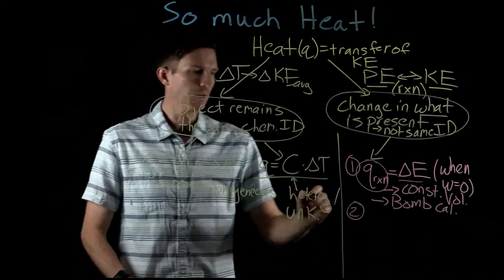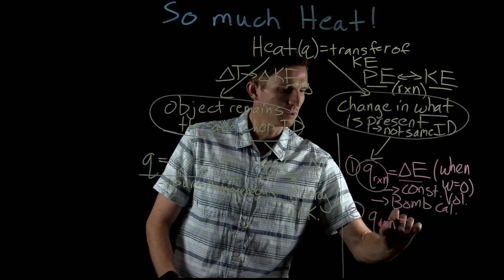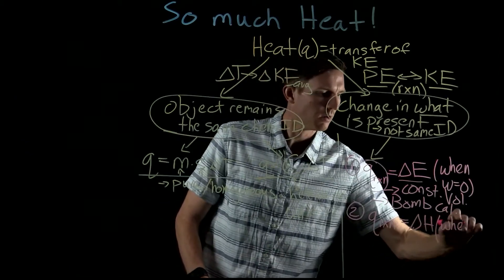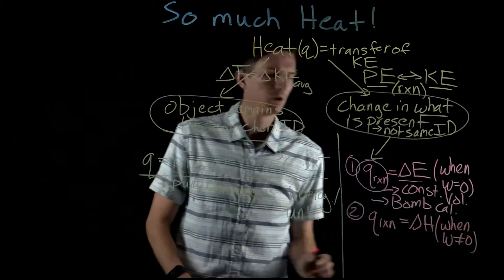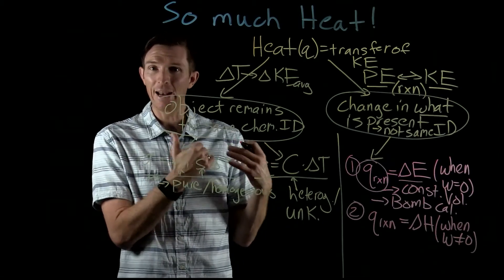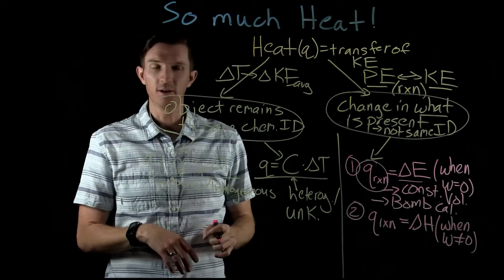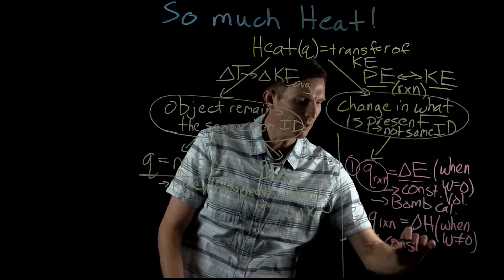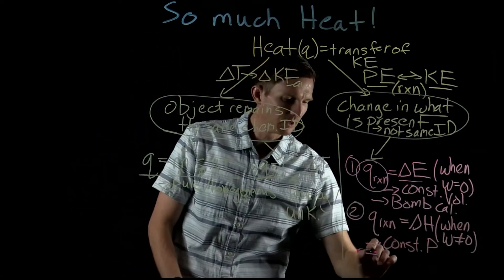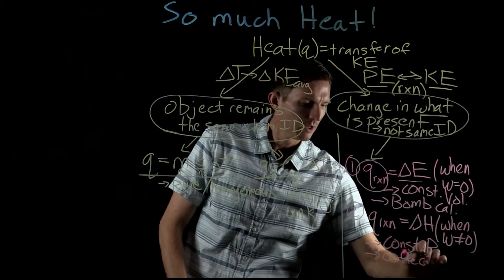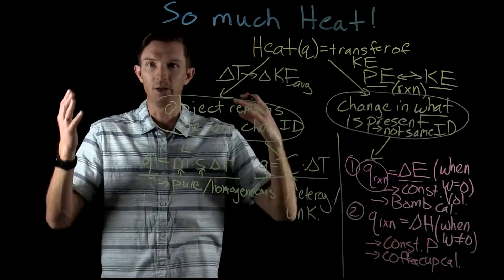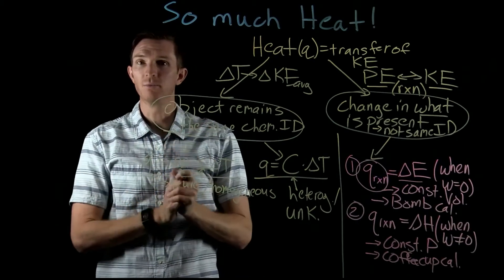The other, more typical exchange of heat is where the Q of the reaction equals the change in enthalpy, ΔH. This is true when work is not constrained to zero — we're not trying to calculate the exact work produced or consumed. Here, volume can expand or contract (expansion work is possible), but pressure remains constant. This is the coffee cup calorimeter, or pretty much every reaction open to the environment.